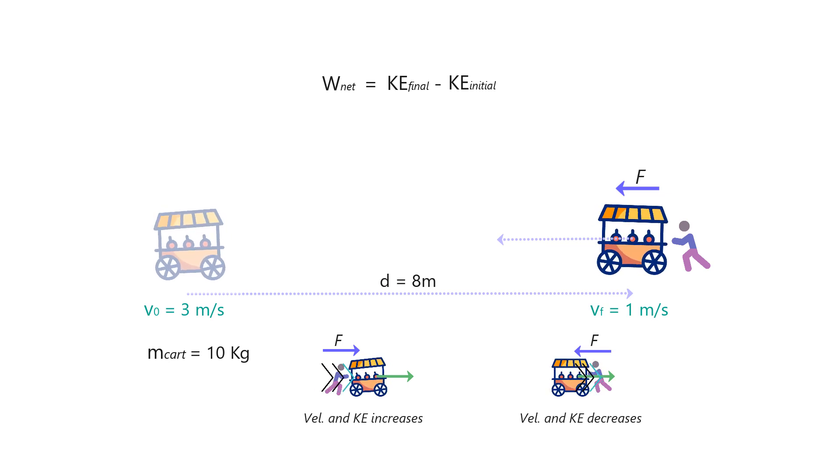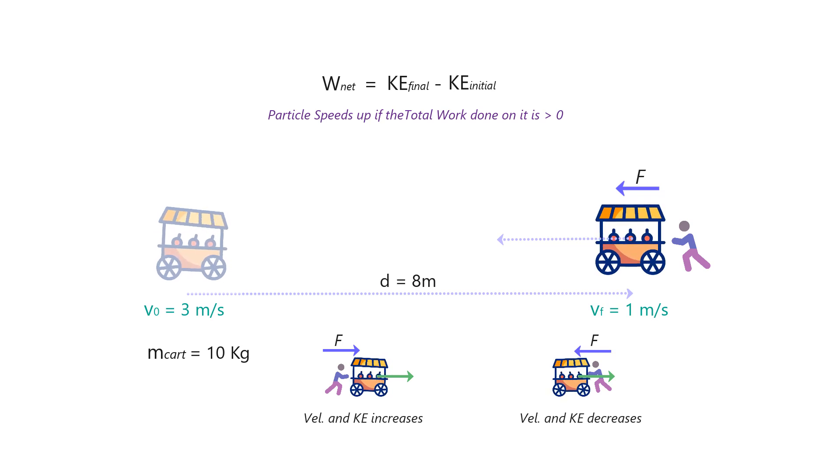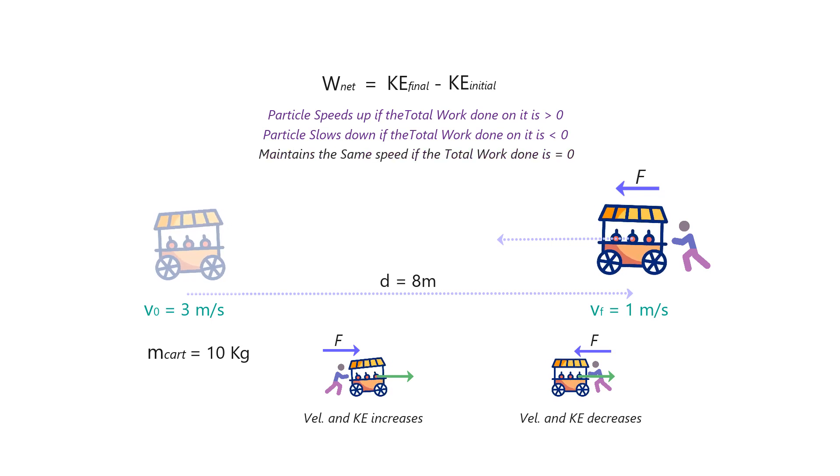Another interesting way of interpreting the work energy theorem would be that when a particle undergoes a displacement, it speeds up if the total work done on it is greater than zero and slows down if the total work done on it is less than zero and maintains the same speed if the total work done is zero.